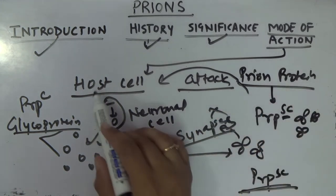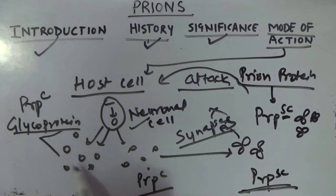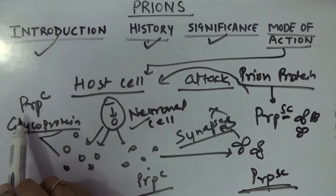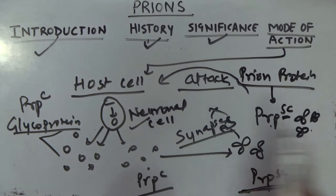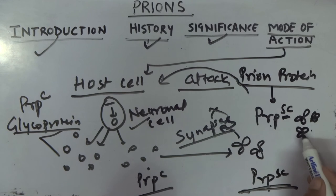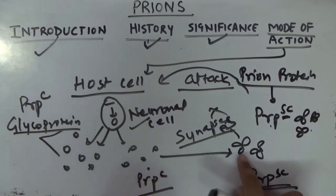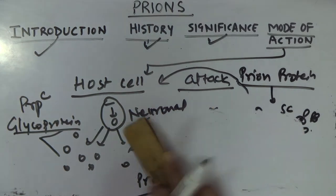To revise: under normal conditions, the host neuronal cell produces a glycoprotein called PrPC. The prion protein is PrPSc. One important point: both PrPC and PrPSc have the same amino acid sequence, but they differ in their folding. The protein is folded differently, and folding is responsible for determining the function of a protein.